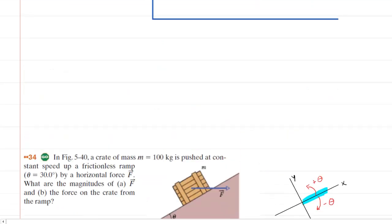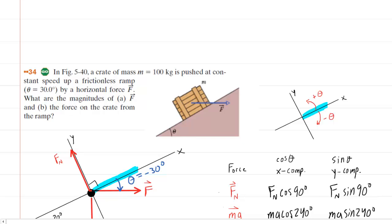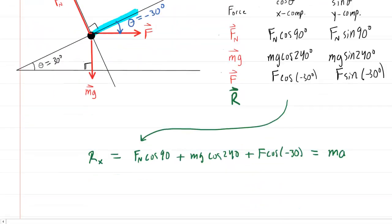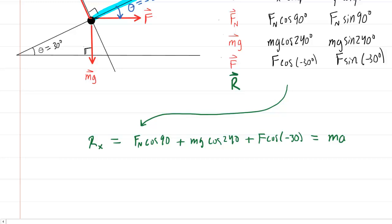Let's not forget that in this question the crate is moving at constant speed, so constant speed would indicate that the acceleration is in fact zero. So we can actually plug zero in for the acceleration, which is going to make the right side of the equation equal to zero. We'll look at the y components as well, so basically the same equation, but we'll be using the sine instead of the cosine. And this will be set equal to mass times the acceleration, which is zero.